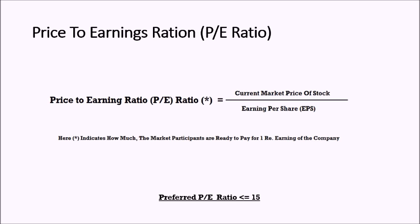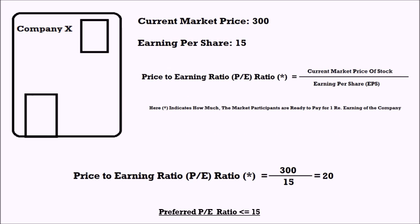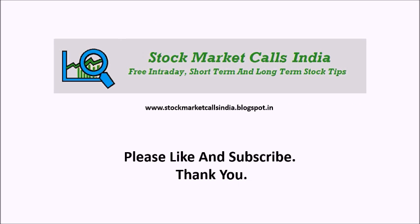Here is another example. If the current price of the stock is 300 rupees and the earnings per share is 15 rupees, the PE Ratio becomes 20 when you divide 300 by 15. The value 20 represents that for every 1 rupee of earnings, investors are ready to pay 20 rupees. The preferred PE Ratio is less than 15. This concludes the tutorial on Earnings Per Share and Price to Earnings Ratio. Please like and subscribe — thank you.